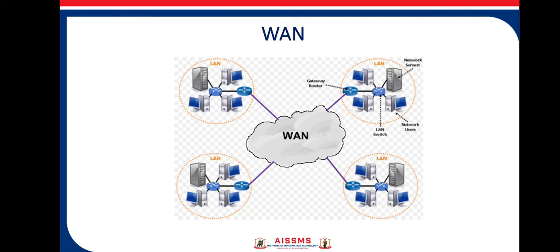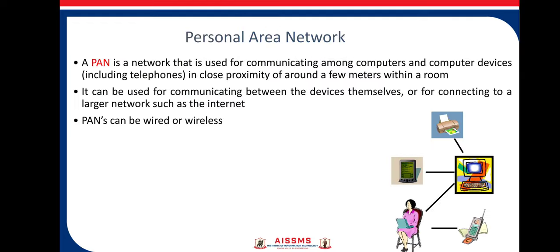WAN is larger than both LAN and MAN in terms of area coverage. We can see that different LANs are connected together using the wide area network. So we have covered three types: LAN, MAN, and WAN. There are also other types of network, including PAN, the personal area network.